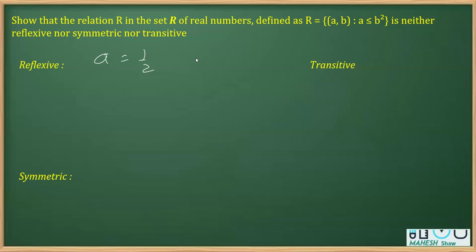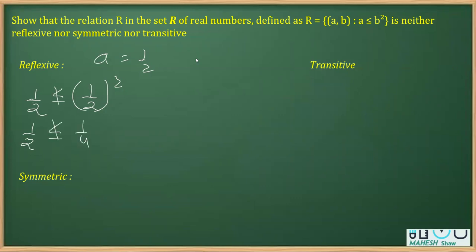If I place a = 1/2 into the relation, replacing both a and b with 1/2, we get 1/2 on the left and (1/2)² = 1/4 on the right. Clearly, 1/2 is not less than or equal to 1/4 — in fact, it is more than 1/4. This implies that (1/2, 1/2) does not belong to R. Hence, it is not reflexive.